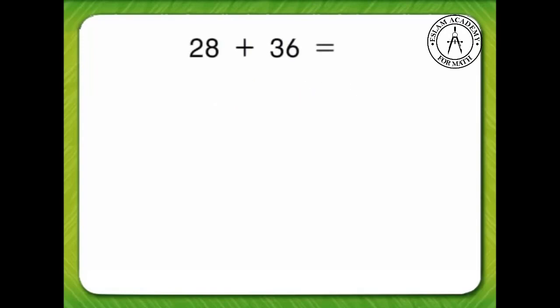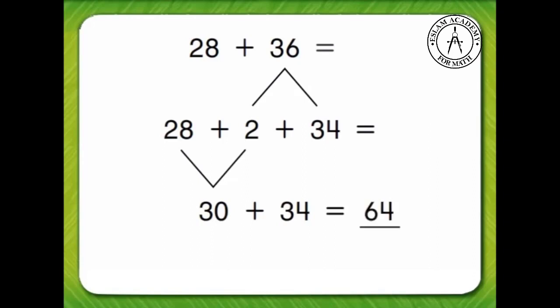One way to find 28 and 36 is to break 36 into 2 plus 34. Then make 28 plus 2 into 30. Now add 30 and 34. 30 plus 34 equals 64.